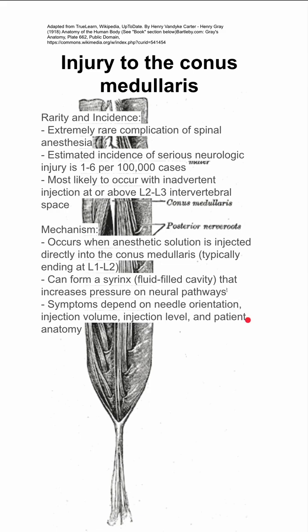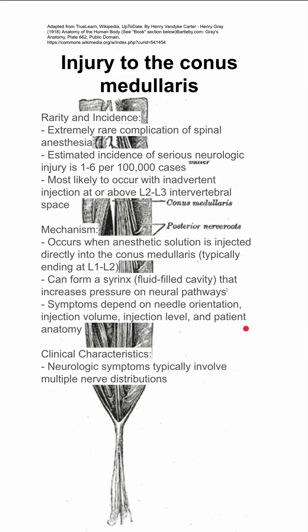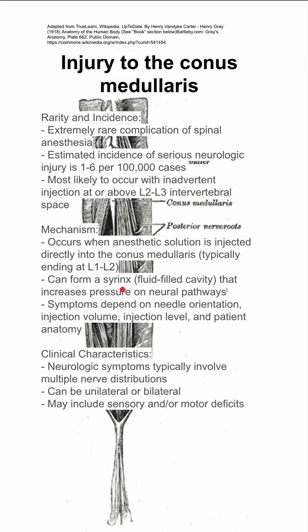The symptoms depend on your needle orientation, injection volume, injection level, and the patient's anatomy. There are neurologic symptoms that typically involve multiple nerve distributions as a result of having this syrinx — this fluid in the spinal column. Symptoms can be unilateral or bilateral, and may include sensory and/or motor deficits.